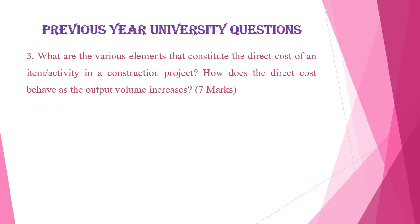The third question is: what are the various elements that constitute the direct cost of an item or activity in a construction project, and how does this direct cost behave as the output volume increases? This question is also from Module 3.